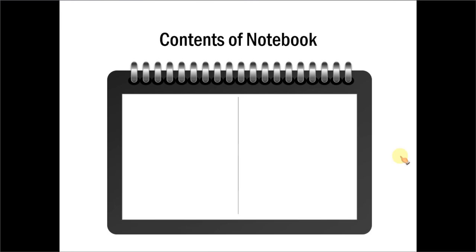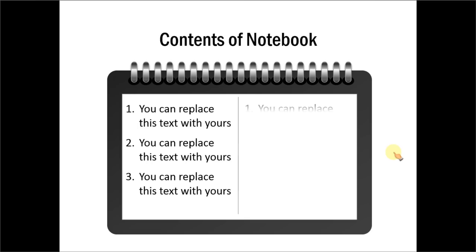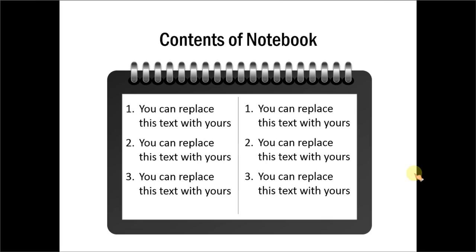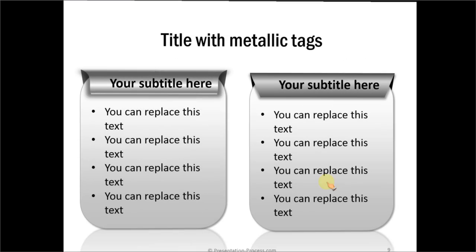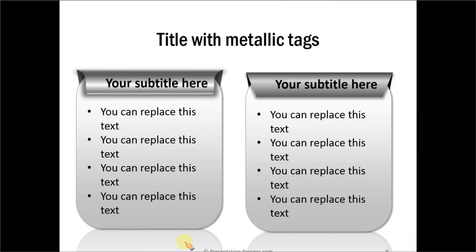Let us take another example. Here we have provided an interesting placeholder for your list to reside on. This makes the slide look visually more interesting. Even if you use just plain text boxes, you can make them look interesting with some nice design elements. You can even make them look 3D with some metallic sheen.